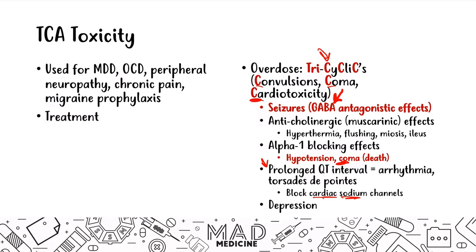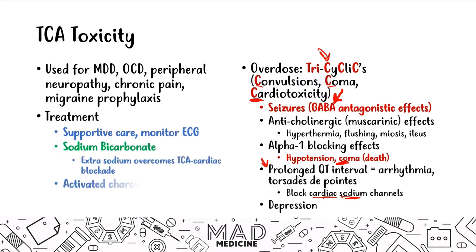When treating TCA toxicity, first provide supportive care — make sure the patient's vitals are good and their EKG is okay, because you want to make sure they're not having QT prolongation or going into arrhythmia or torsades de pointes. Then, make sure the patient is on sodium bicarbonate — the extra sodium is going to overcome the TCA's cardiac sodium channel blockade. You can also give activated charcoal to bind to the TCA and inactivate the substance. Sodium bicarbonate is very important for TCA toxicity.